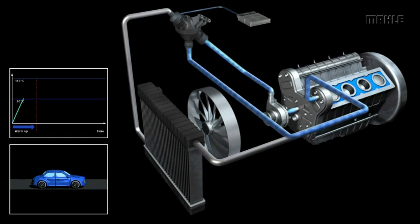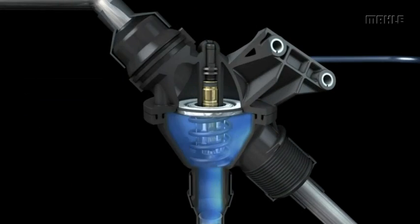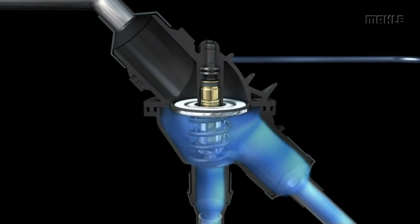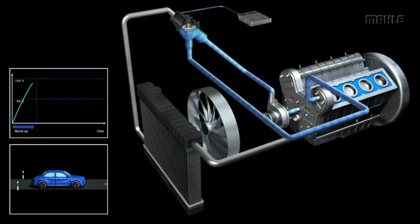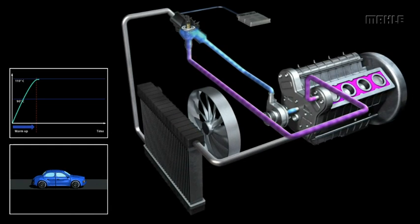Using the ECU, engineers map the opening of the thermostat to correspond to certain operating conditions. Here you see the flow of cold blue coolant flowing to the thermostat's bypass valve and back to the engine. At this point, the thermostat is not yet open.